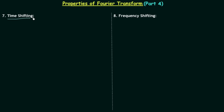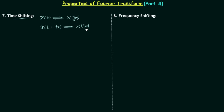The seventh property is the time shifting property. As with earlier lectures, we will first understand the property and then prove it. Let's say there is a time domain signal x(t) having the Fourier transform X(jω). Now we perform the left shifting of the signal by t0. In this scenario, the Fourier transform X(jω) will get multiplied by e^(+jωt0).